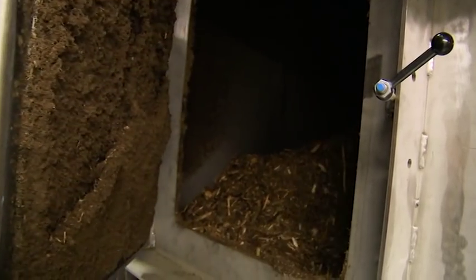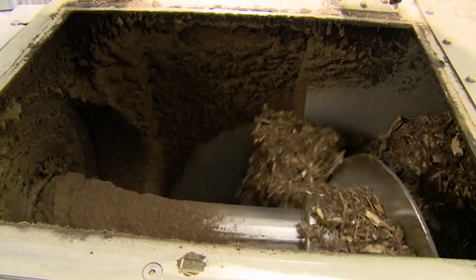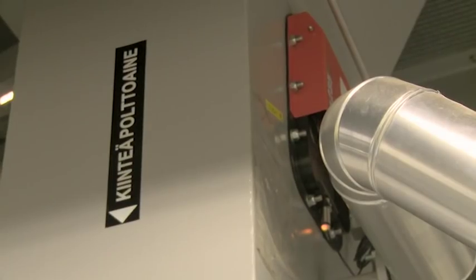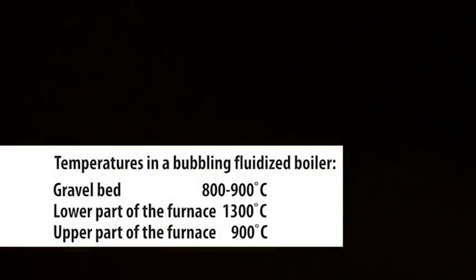The desired boiler fuel supply rate can be determined by adjusting the rotation speed of the screw feeders, which load the fuel into the boiler furnace. The fuel is fed into the boiler on a gravel bed, where it is partially burned in the heat of the gravel bed and partially in the gas zone above.